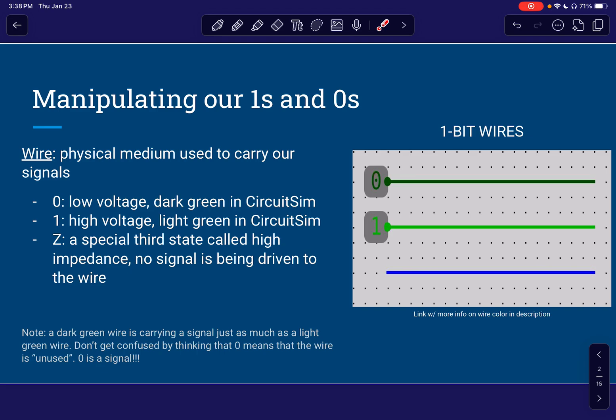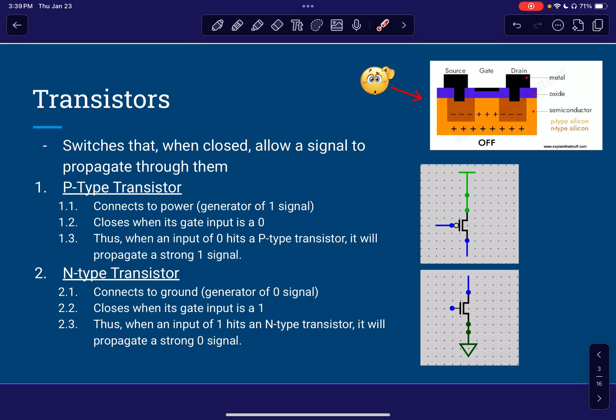And I'll also put a link with the documentation for circuit sim on wire color in the description. There's a little more information on multi-bit wires. But right now, this is the basic three for one-bit wires that is important to know. All right. So now that we've got wires sort of under our belt, let's talk about transistors.